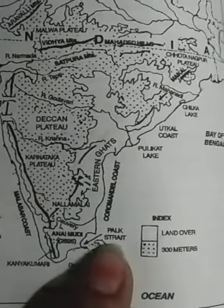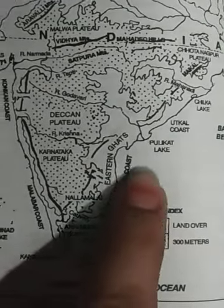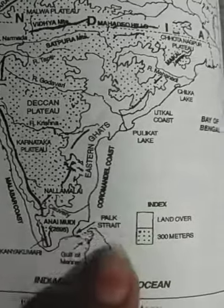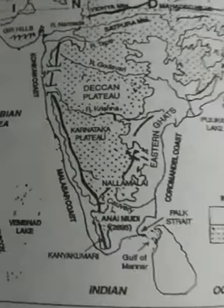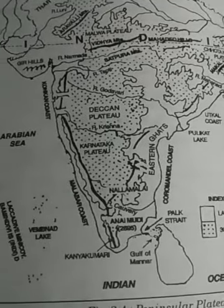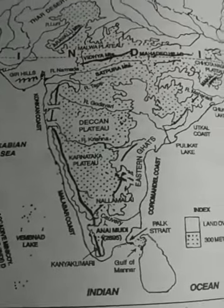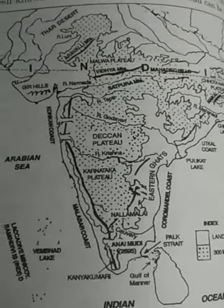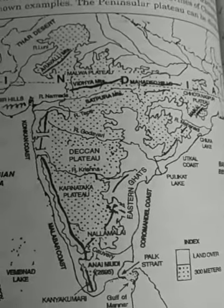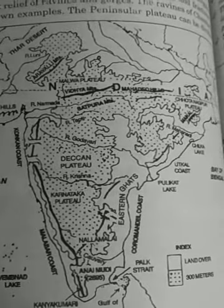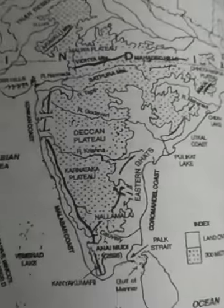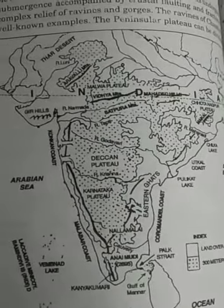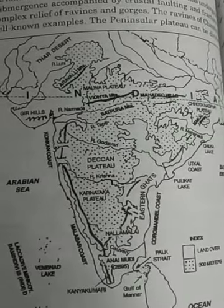So those were the divisions — both western and eastern coastal plains. I hope you understand. After this, only one or two topics remain: islands of the Arabian Sea and islands in the Bay of Bengal. Be careful, keep reading, and be safe. Thank you so much.